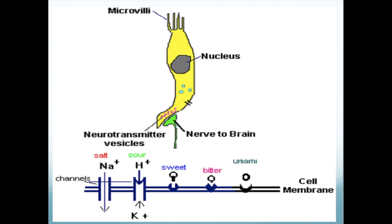How is the taste nerve excited? Taste nerve fibers form a branching terminal network interwoven around the bodies of taste cells. Some of these fibers invaginate into the folds of the taste cell membrane. Many neurotransmitter vesicles form beneath the cell membrane near the fibers, and release of the neurotransmitter substance excites the nerve fiber endings.